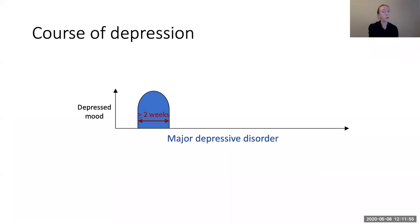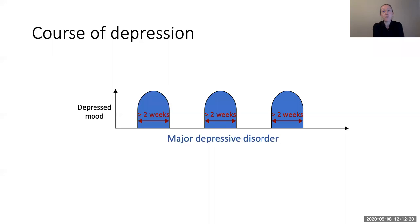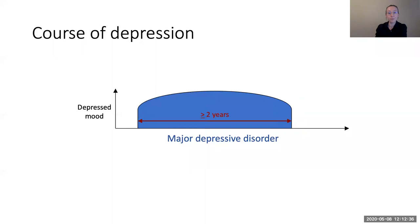To be considered a major depressive episode, symptoms need to last at least two weeks. Most major depressive episodes will remit on their own, even without treatment, but the average duration of an untreated major depressive episode is six to nine months — which is a really long time to be feeling depressed. Major depressive disorder is often recurrent. About 40 to 50 percent of people who experience one major depressive episode will go on to experience another. Even though most people recover within a year, about 20 percent will still be in the same episode after two years, about 10 percent after five years, and about six percent after 15 years — what's called chronic major depressive disorder.